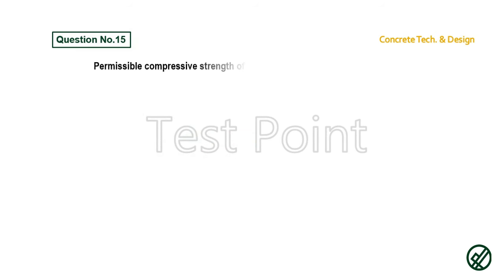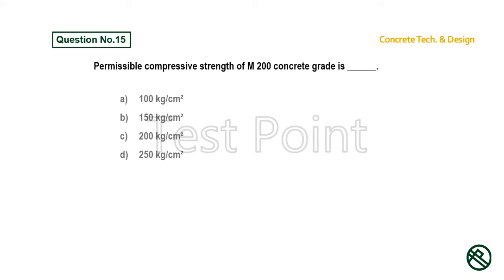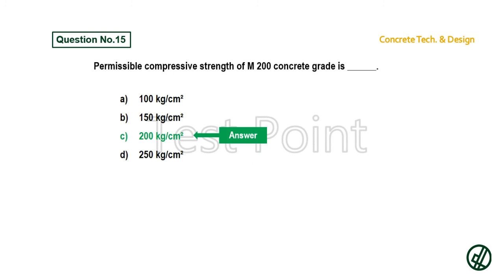Question number 15: Permissible compressive strength of M200 concrete grade is — Option A: 100 kg per cm². Option B: 150 kg per cm². Option C: 200 kg per cm². Option D: 250 kg per cm². Answer is Option C: 200 kg per cm².